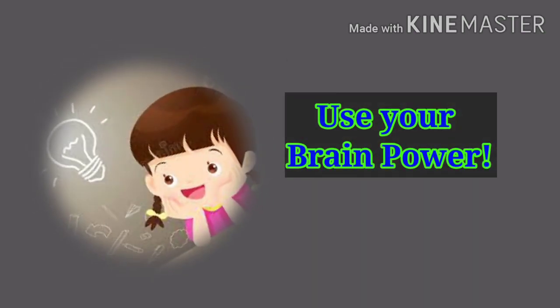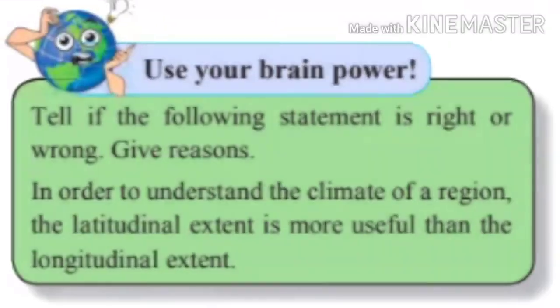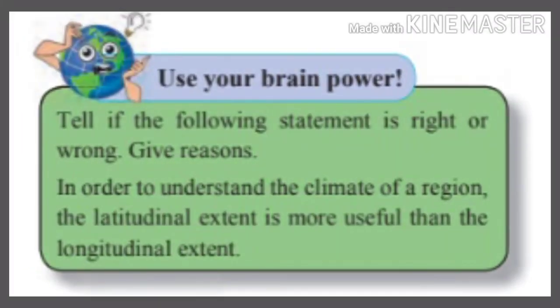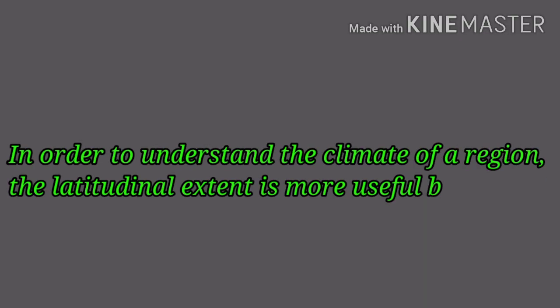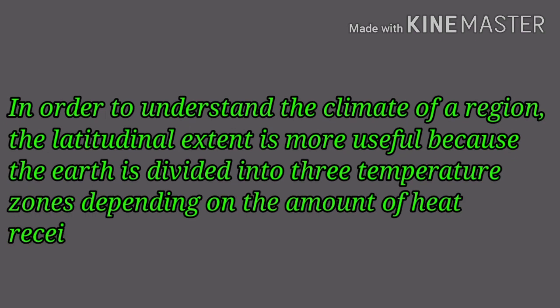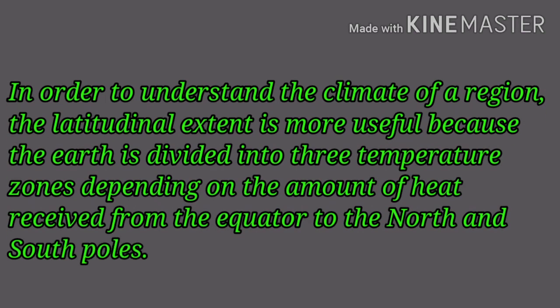Use your brain power. Tell if the following statement is right or wrong. Give reasons. In order to understand the climate of a region, the latitudinal extent is more useful than the longitudinal extent. Answer: In order to understand the climate of a region, the latitudinal extent is more useful because the earth is divided into three temperature zones depending on the amount of heat received from the equator to the north and south poles.